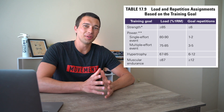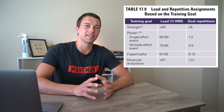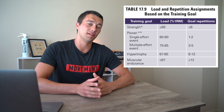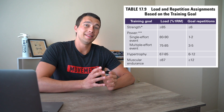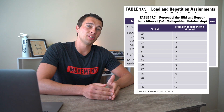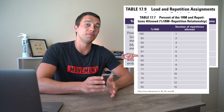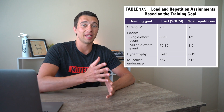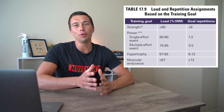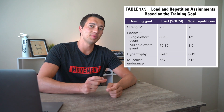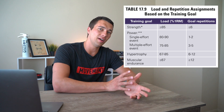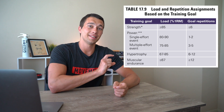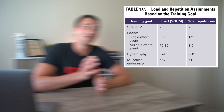Just because an athlete can do 10 reps at 75% one rep max doesn't mean they should — typically they're going to program fewer than that. To decide how many reps an athlete should actually be doing, we use a different chart from the CSCS book. For strength, athletes should be doing greater than 85% of one rep max with fewer than six reps. For example, a five-by-five at 80% or a five-by-four at 82% one rep max.